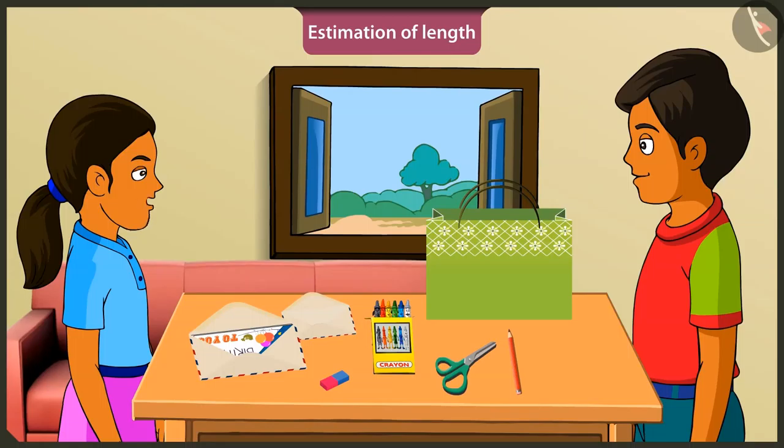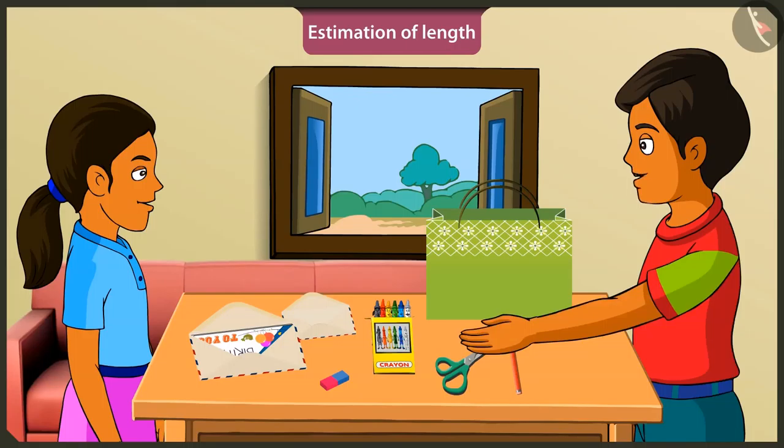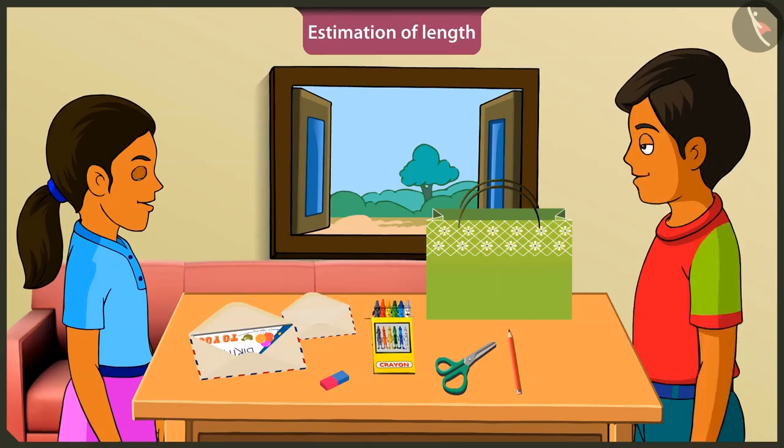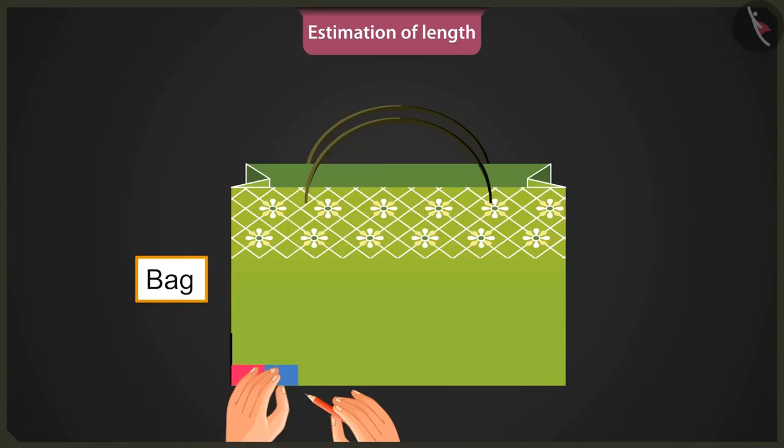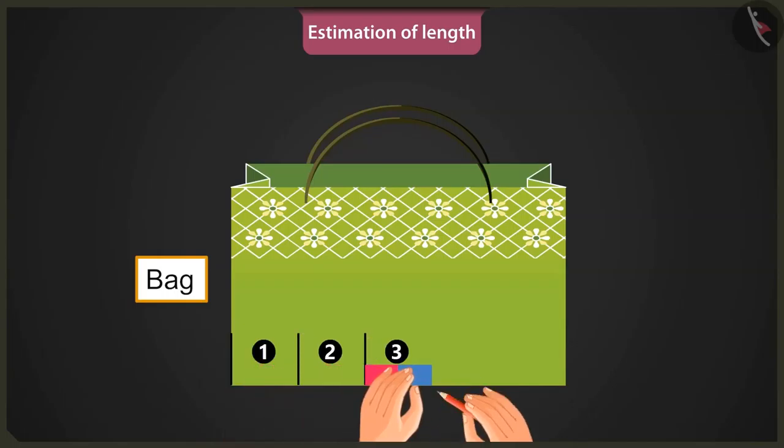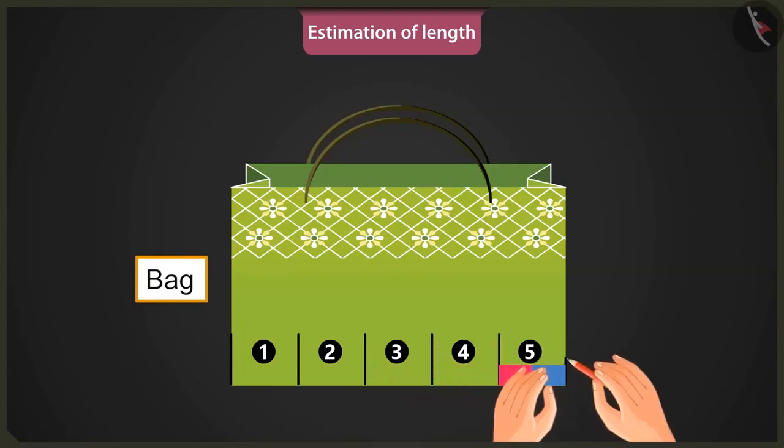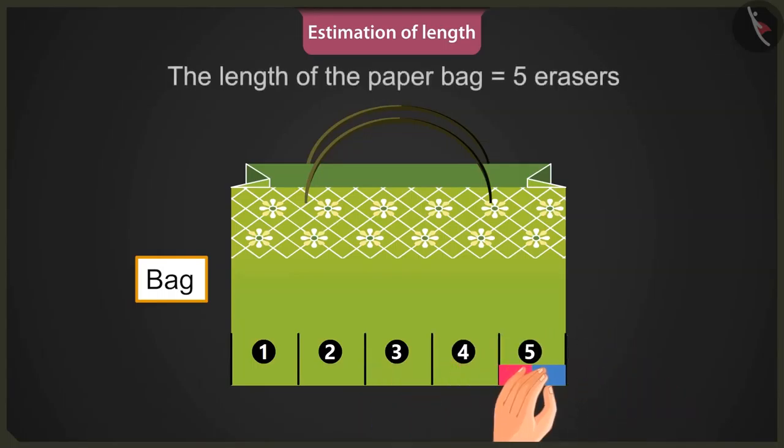Wow, brother! This is really interesting. Now, considering this rubber a unit of measuring the length, determine the length of this paper bag. Okay? Hmm. To measure the bag's length, place the rubber at one end of the bag. So, it will be one, two, three, four and five. The length of this paper bag is five erasers.